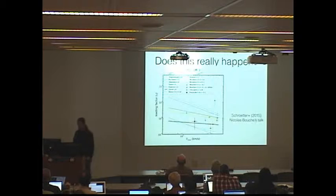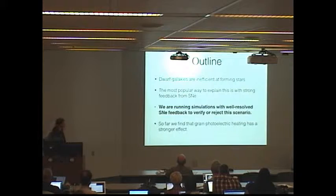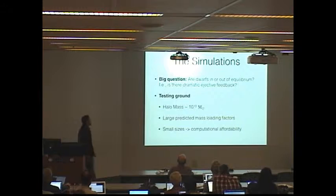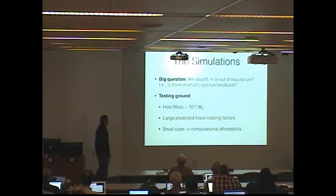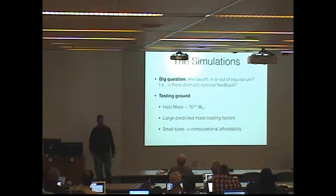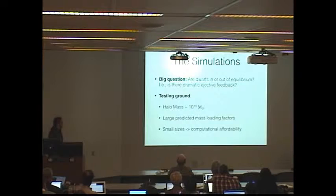That's why we're running simulations with well-resolved supernova feedback. The big question when we started this was, are dwarfs in or out of equilibrium, i.e., is there really this dramatic ejective feedback going on? We're going to test this in 10^10 halo mass galaxy. Many people predict very large mass loading factors for these galaxies. And these also have the advantage that because dwarf galaxies are small, we can actually afford to simulate them at high resolution.